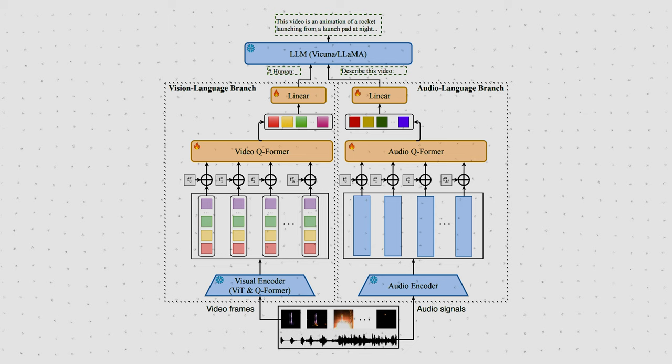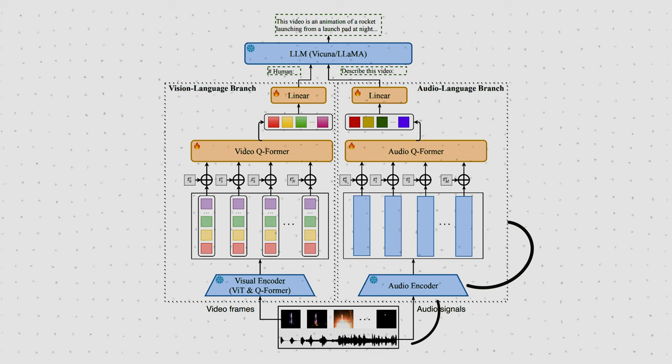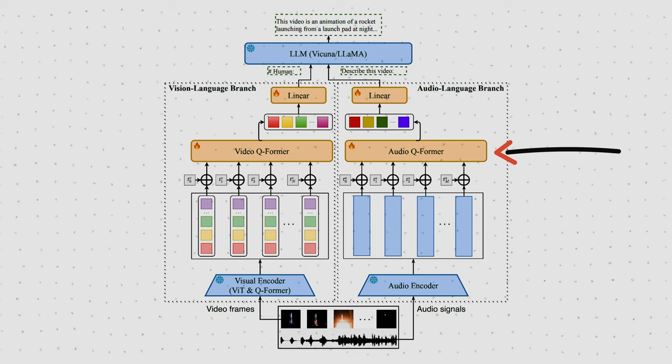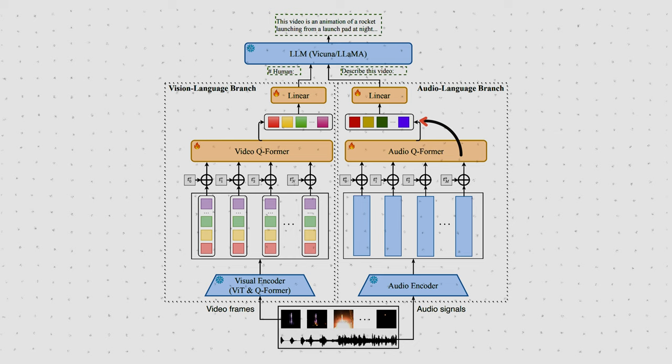We now again have M spectrograms that are encoded by a frozen audio encoder into M audio clip embeddings. We then again apply learnable position embeddings, have a Q-Former that compresses all audio clip embeddings into one video audio embedding that is then finally transformed to match the LLM's embedding shape. Conceptually, not too tricky, right?